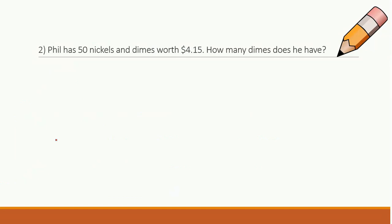Let's take a look at number two. Phil has 50 nickels and dimes worth $4.15. How many dimes does he have? So we're wondering about dimes and nickels. So I'm going to say x equals nickels, and y equals dimes. What would be a good thing? I have 50 and I have $4.15. Well, I know 50 nickels and dimes. That's nickels and dimes together makes 50. So I know x plus y must be equal to 50.